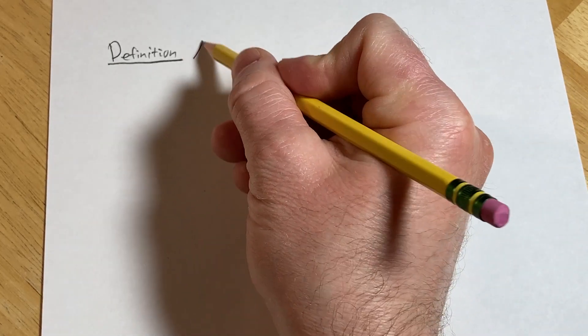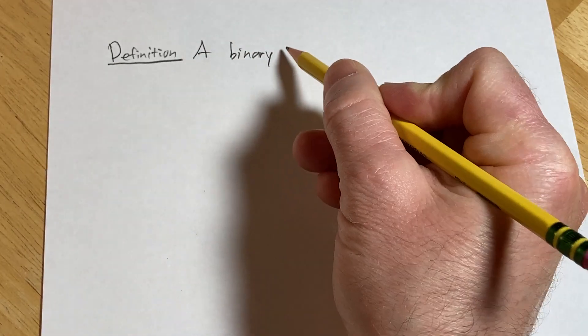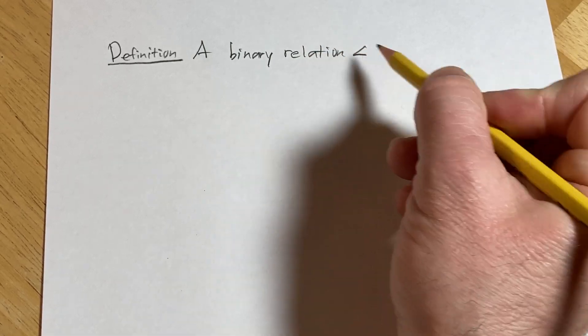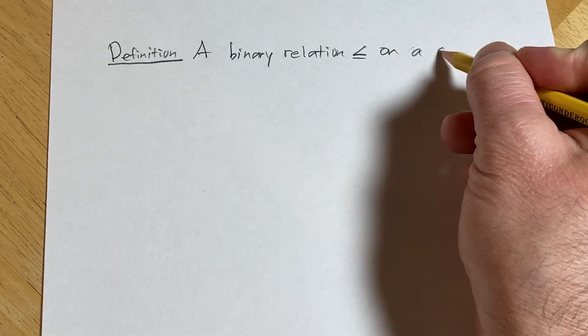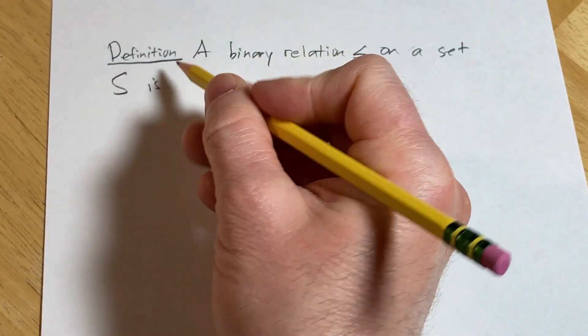So we will say a binary relation, let's just say less than or equal to on a set S is called a partial ordering.